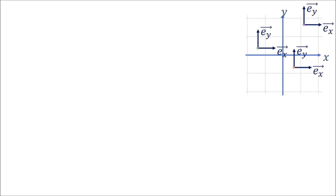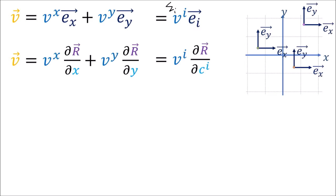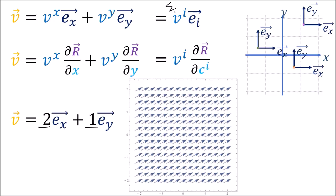To start talking about the covariant derivative, let's consider the rate of change of some vector field v, which can be expanded in the xy Cartesian basis, or written in Einstein notation with an implied summation over i. Let's consider a vector field with components 2, 1. This vector field looks constant — all the arrows face the same direction and have the same length — so we would expect the derivatives of this vector field in the x or y directions to be zero.